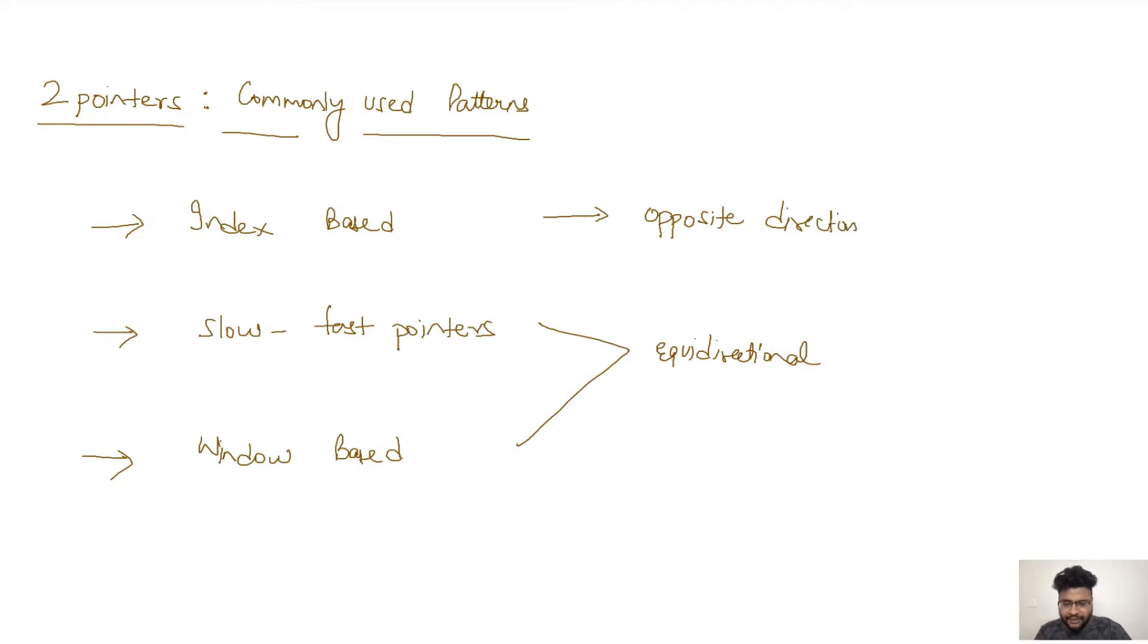Now what each of them means is basically these are three different techniques through which we can actually move our pointers. Remember, in the very first session we spoke about how in two pointers we actually move two or more than two pointers in order to get the required result, and the logic will differentiate according to every problem statement. Now we have accumulated those logics and tried to collate those problem statements into these three techniques.